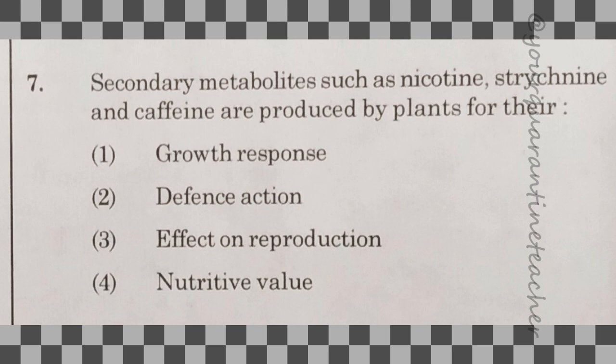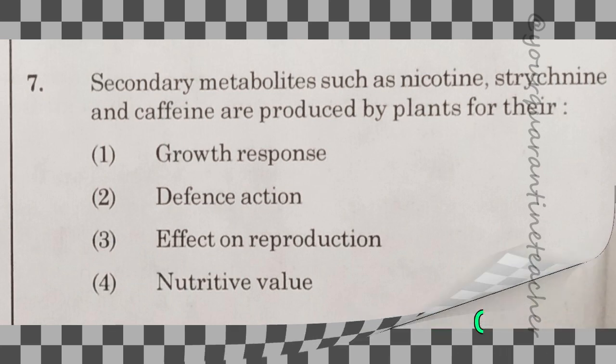7th question: secondary metabolites such as nicotine, strychnine and caffeine are produced by plants for their defense action. The answer is option 2 — defense action.